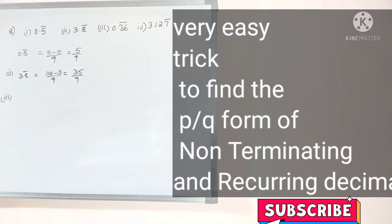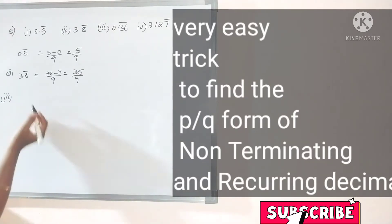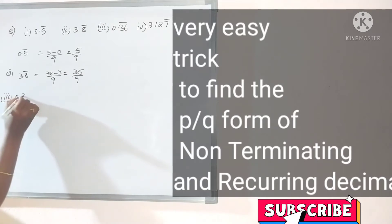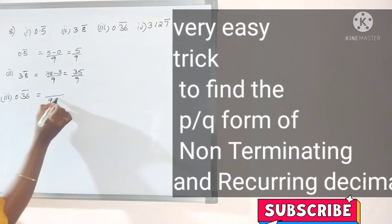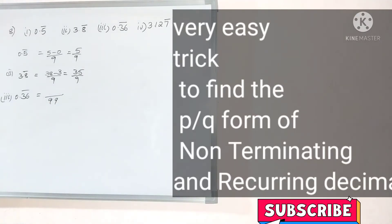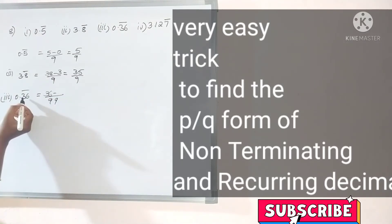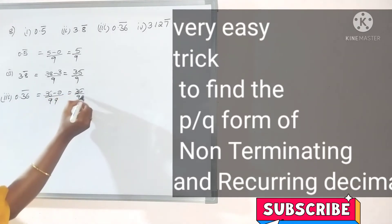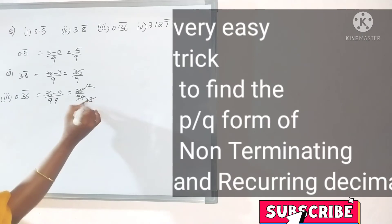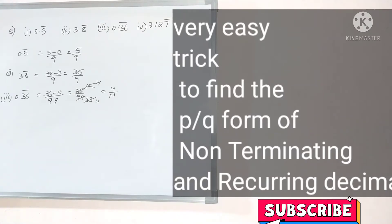If they ask the question for two marks, you can do the full process. But if it's just a half mark or multiple choice question, you can use this trick directly. Take 0.36 bar — how many numbers does the bar contain? Two numbers, so write two 9s in the denominator. Write the complete number and subtract the digits to the left of the bar. That gives 36 by 99, which simplifies to 4 by 11.